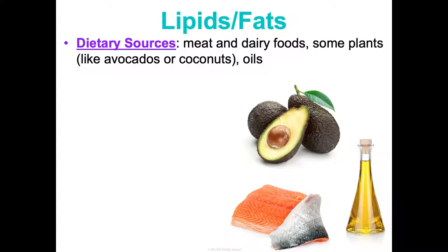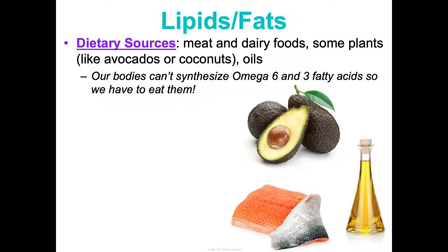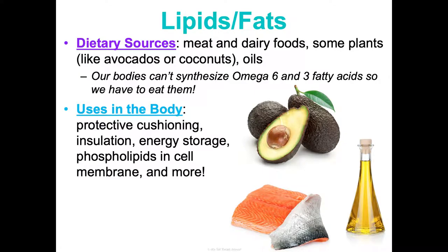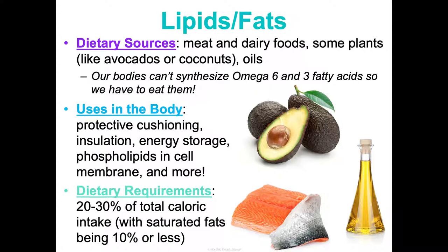Lipids and fats come mainly from meat and dairy foods, but also from some plants like avocados and coconuts, and from oils. Our bodies cannot make omega-6 and omega-3 fatty acids, so it's really important that we eat those. We use fats for protective cushioning, insulation, energy storage, and phospholipids in cell membranes, among many other roles. About 20 to 30 percent of your total caloric intake should be from fats, with saturated fats specifically being 10 percent or less.